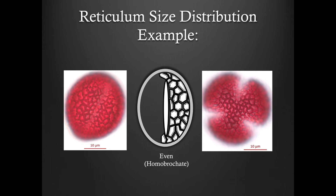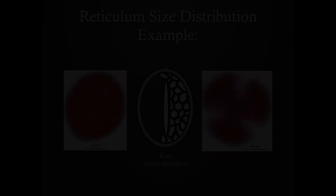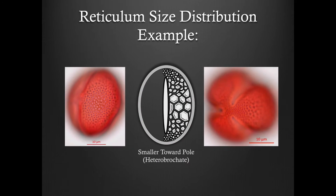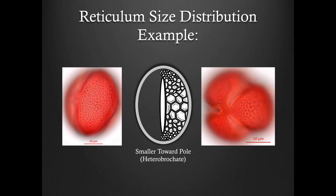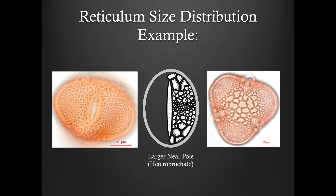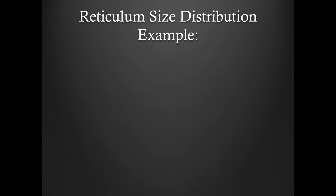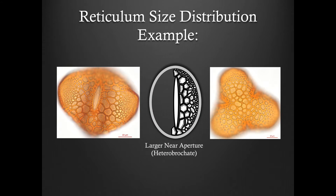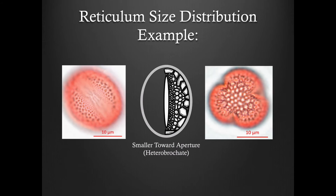Here is an example of a grain with even reticulum. Here is an example of a grain where the reticulum gets smaller toward the pole. Here is an example of a grain where the reticulum gets larger near the pole. Here is an example of a grain where the reticulum gets larger near the aperture. Here is an example of a grain where the reticulum gets smaller toward the aperture.